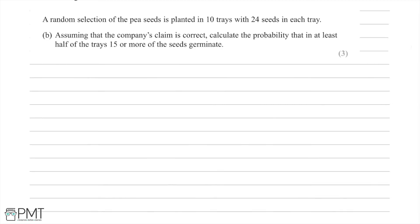In part B we're told that a random selection of pea seeds is planted in 10 trays with 24 seeds in each tray. Assuming that the company's claim is correct — remember they claim 55% of pea seeds germinate — we're asked to calculate the probability that in at least half of the trays 15 or more of the seeds germinate.